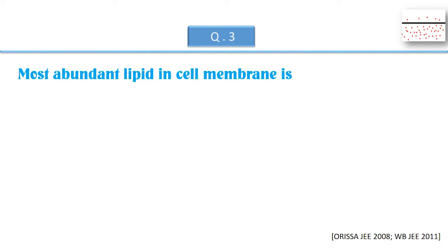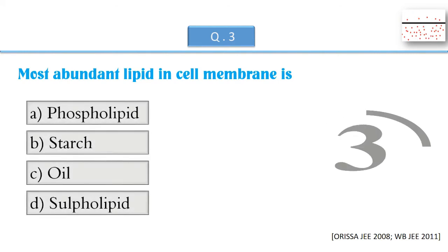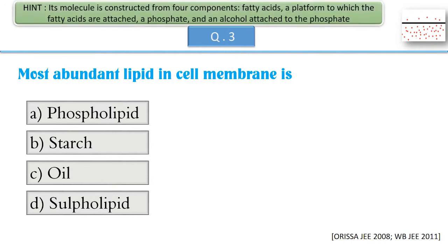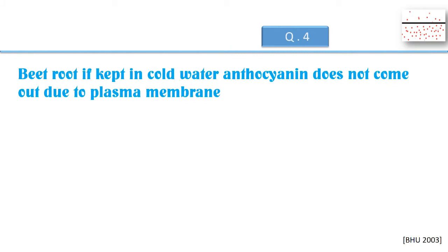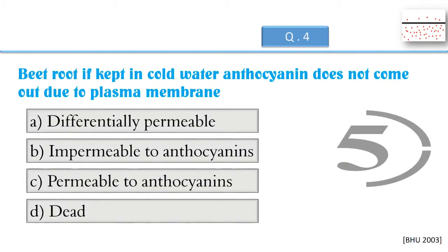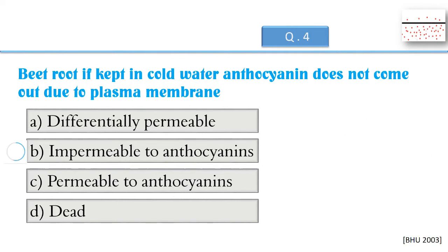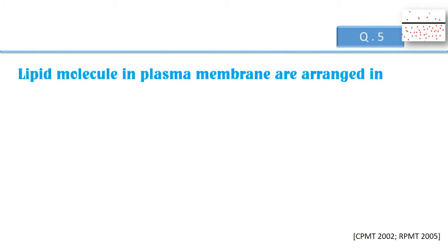Most abundant lipid in cell membrane is? Beetroot if kept in cold water, anthocyanin does not come out due to plasma membrane. Lipid molecule and plasma membrane are arranged in?